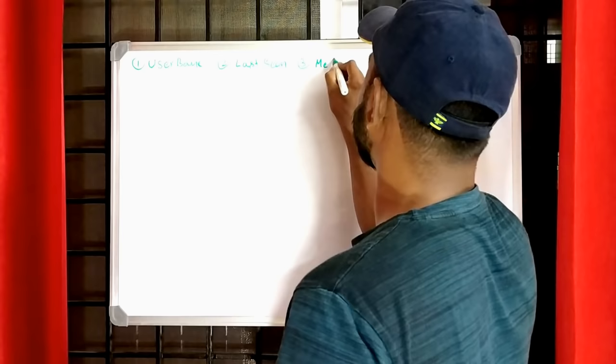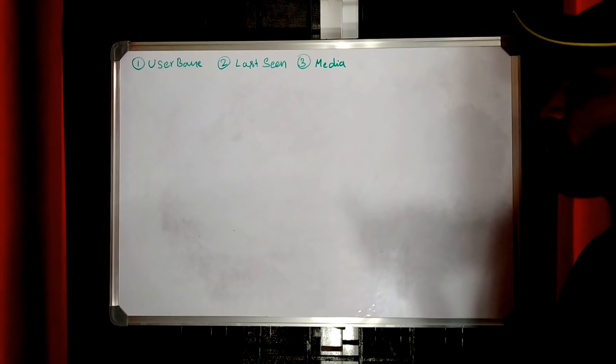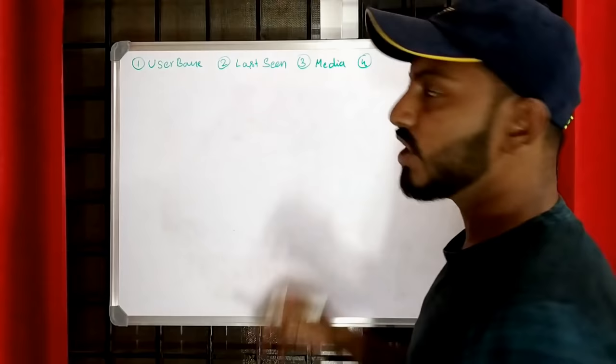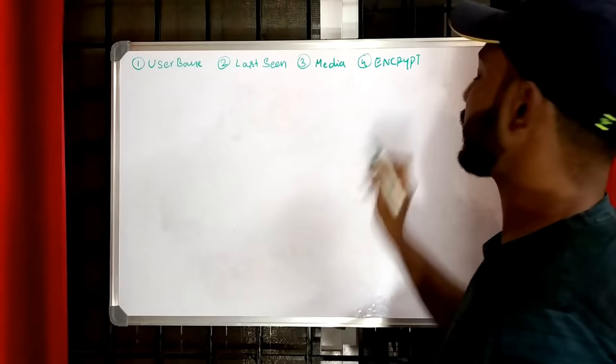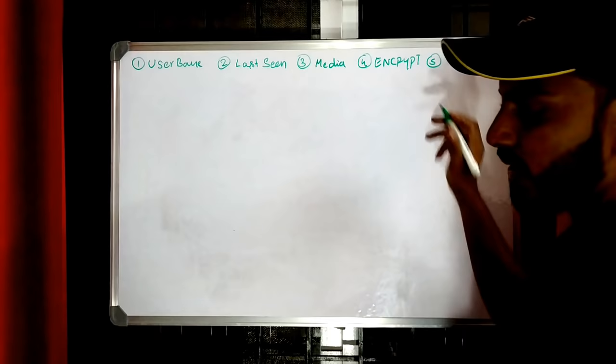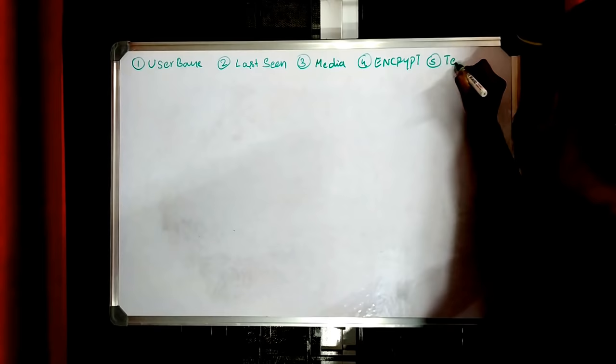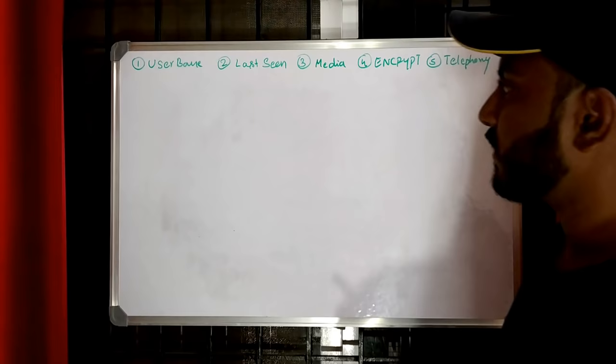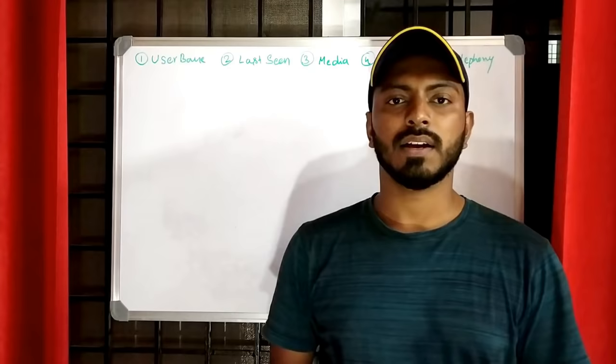Do we need support to send media messages — like images or audio? Do we need to encrypt our messages? Security is very important; to keep messages secure we need to encrypt them. The next thing: do we need to support VoIP or telephony services — that is, audio calls or video calls? Having thought about all these features, let's go ahead and design the system for WhatsApp.